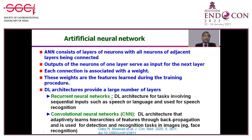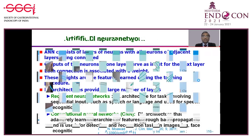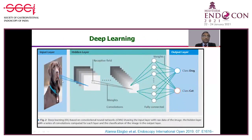The artificial neural network works like a normal human brain and has layers of neurons. The output of one layer of neurons works as the input for the next layer, and each node is given a weight. Deep learning architecture provides a very large number of layers. There are two types of deep learning networks: recurrent neural networks, used mainly for speech recognition, and convolutional neural networks, mainly used for images — which we predominantly use in endoscopy.